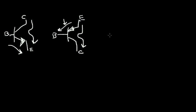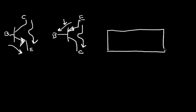Let's examine the physical structure of the PNP transistor. It has three different regions: we'll call this the emitter, it has a thin region that we call the base, and another region called the collector. Now this emitter region is a P-type material. This is the N-type material in the base, and again, a P-type material in the collector — thus PNP.